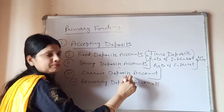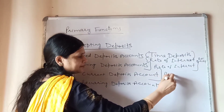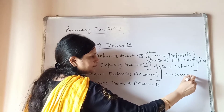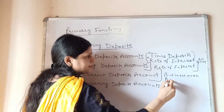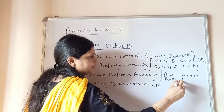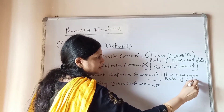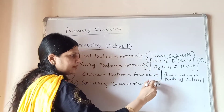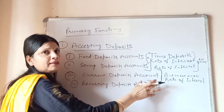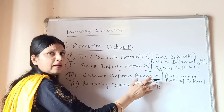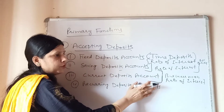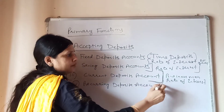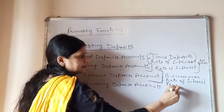The next type is the current deposits account. This account is always maintained by businessmen. The rate of interest on this account is zero — you receive no rate of interest. Also, you are required to maintain a minimum balance in this account. If the amount in your account falls below that minimum, you have to pay a penalty.